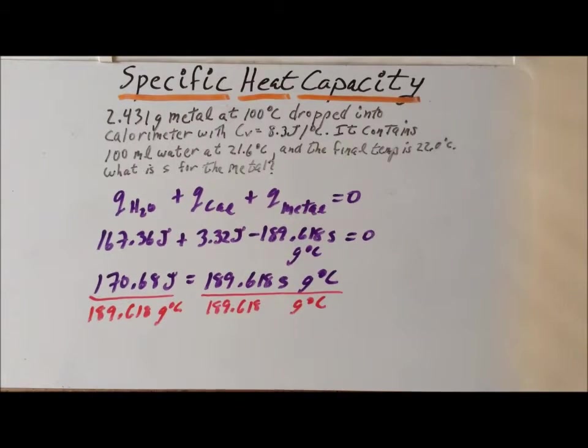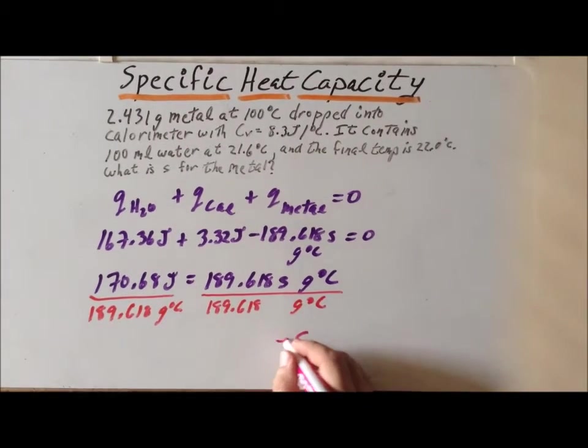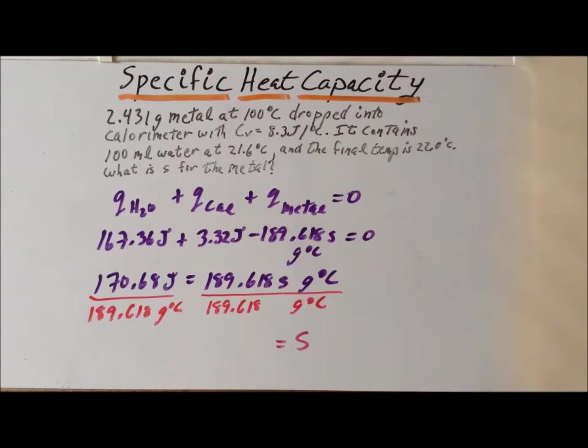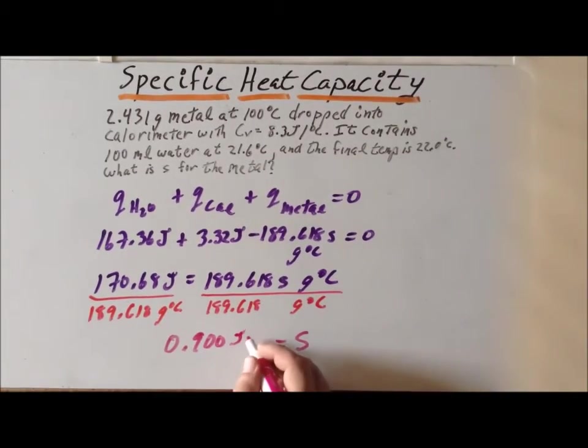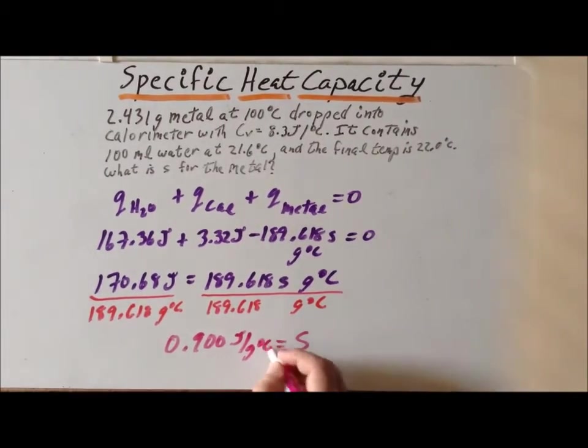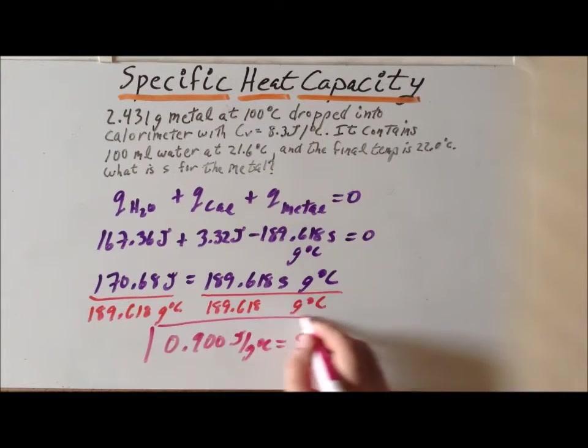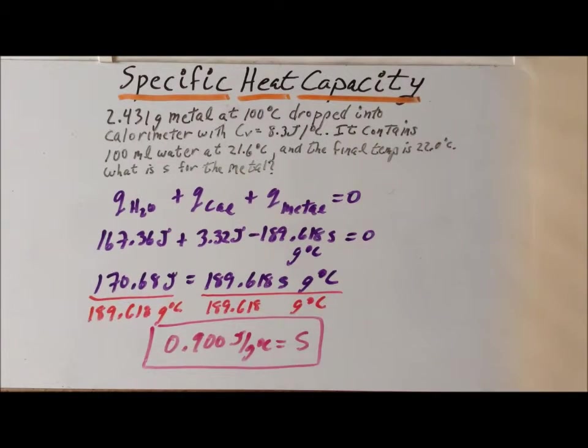And that leaves S alone on the right-hand side. And we've computed its value to be 0.900 joules per gram degree centigrade. And be sure to make sure that your specific heat capacity is actually positive. It must be positive.